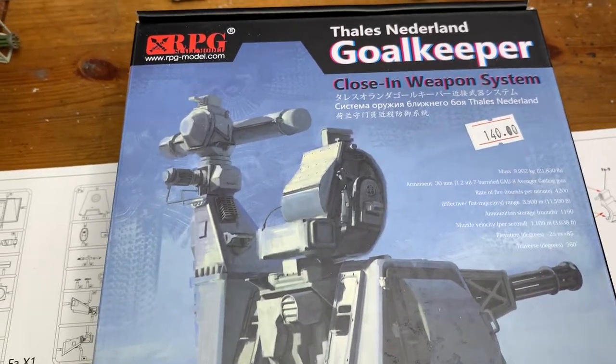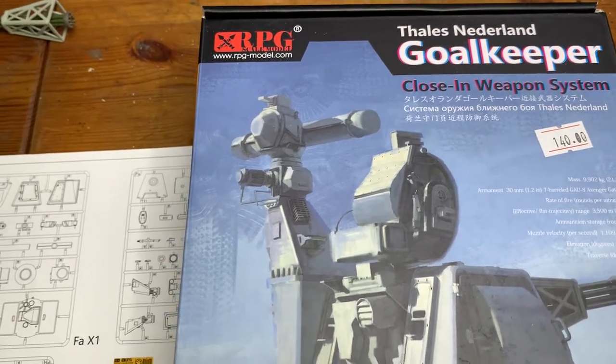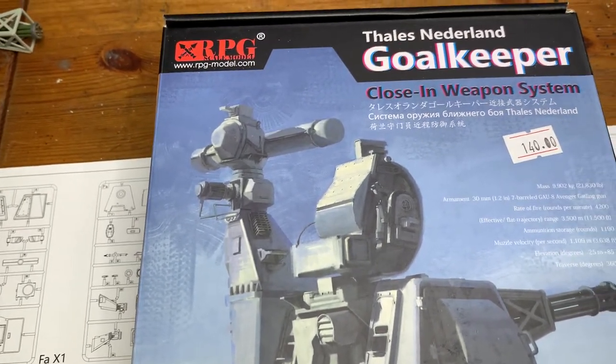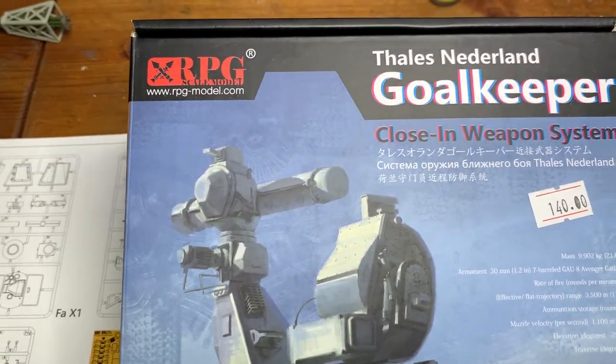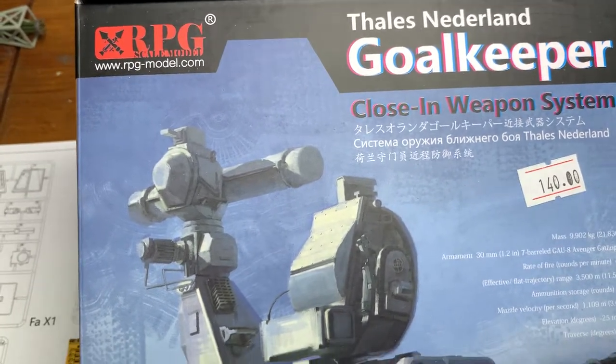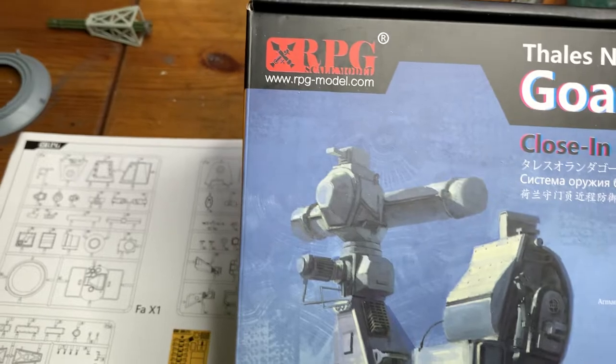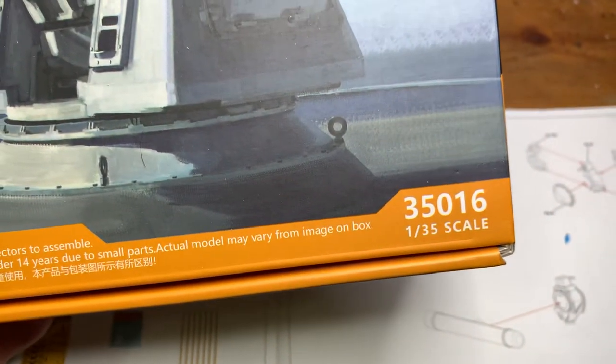Hi folks, I'm Modeless, I'm back for another build update. This time it's the Thales Netherlands Goalkeeper, a close-in weapons system. This kit is from RPG models at 1:35 scale.